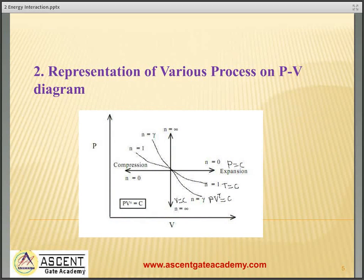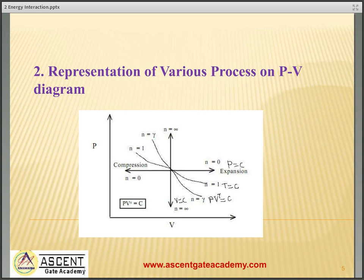Representation of various processes on the PV diagram: pv to the power n equals constant — this is a general polytropic process. If n equals 0, we get a constant pressure process. If n equals 1, isothermal process. If n equals gamma, adiabatic process. If n equals infinity, constant volume process. All these processes are shown on the PV diagram.